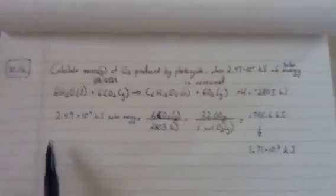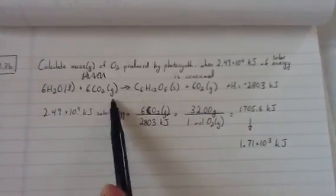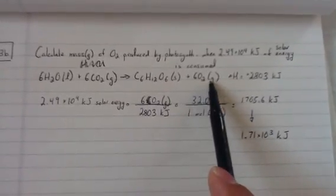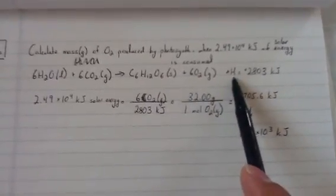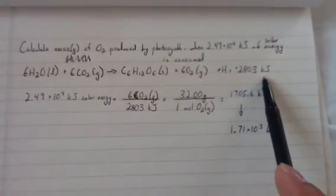So, they give us this equation here. It's 6 H2O in liquid form plus 6 CO2 in gaseous form turns to glucose, which is a solid, plus 6 O2 gases. And we're told that the total enthalpy of this reaction here is 2,803 kilojoules.